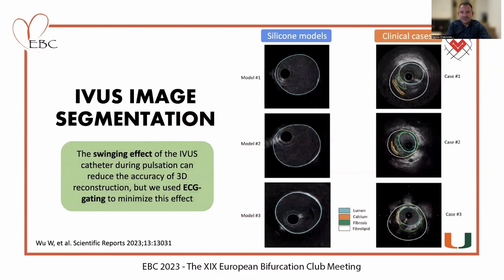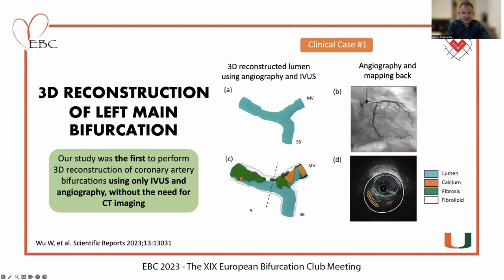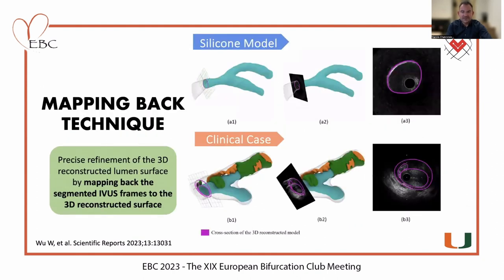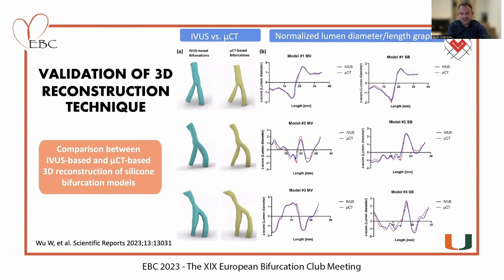Here are some examples of segmented IVUS images — silicone models with lumen only and clinical cases with lumen, wall, and three kinds of materials: calcium, fibrosis or fibrolipid. That's an example of a 3D reconstructed left-main bifurcation from a patient using IVUS, showing the 3D representation and distribution of calcium and fibrosis within the 3D reconstructed wall. The mapping-back technique is an extra step to back-project the segmented IVUS images with 3D reconstructed models to verify the accuracy of our reconstruction technique.